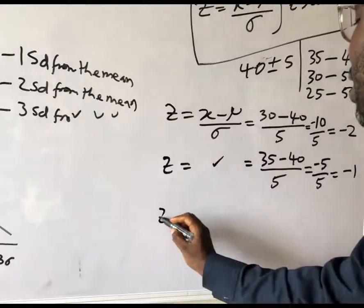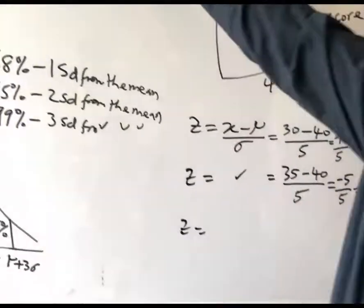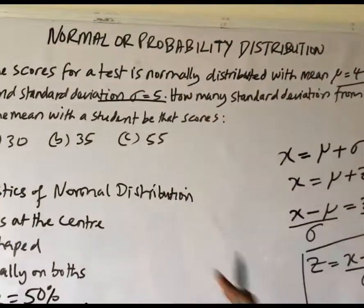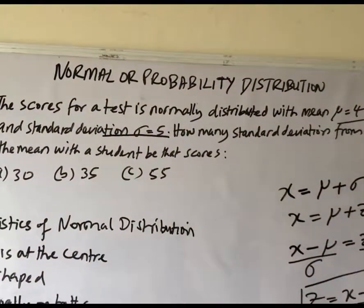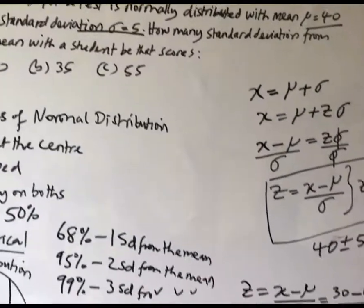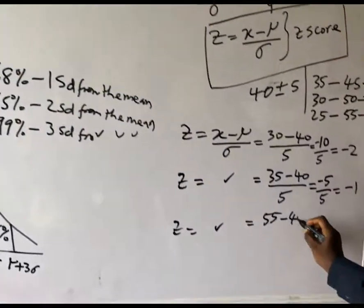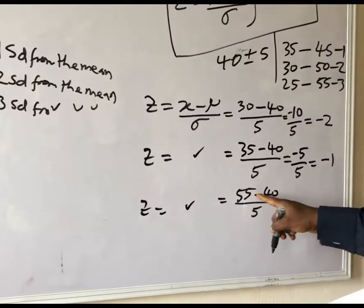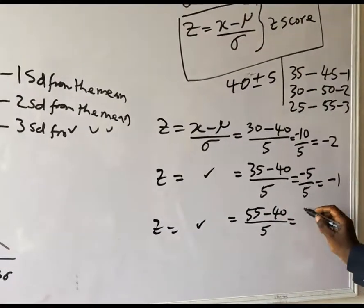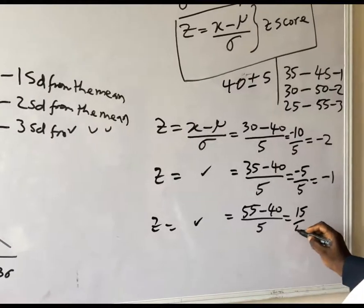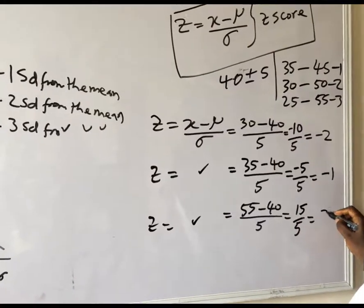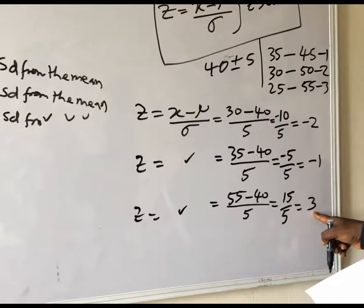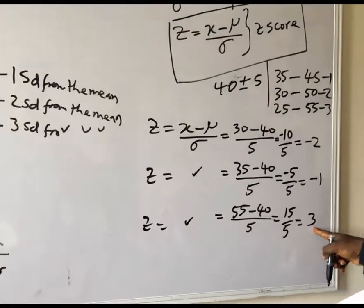The last one: a student has scored 55. z equals 55 minus 40 divided by 5 equals 15 divided by 5 equals 3. So it is 3 standard deviations from the mean.